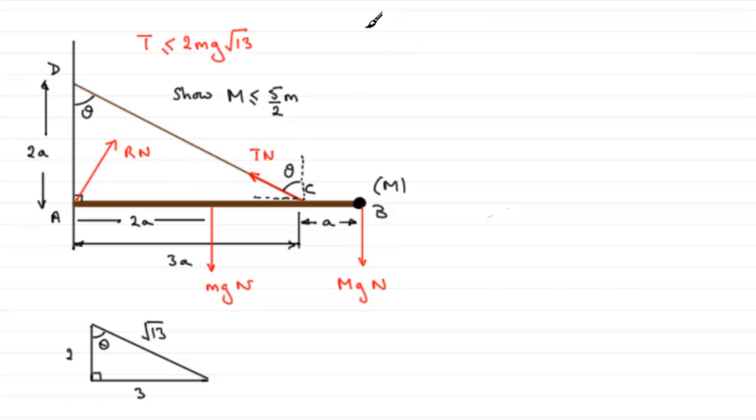Well, we're going to take moments then about A. So if we take moments about A, as we did before, we had anti-clockwise as positive. It's up to you though, it doesn't matter if you take clockwise, it will work out exactly the same.